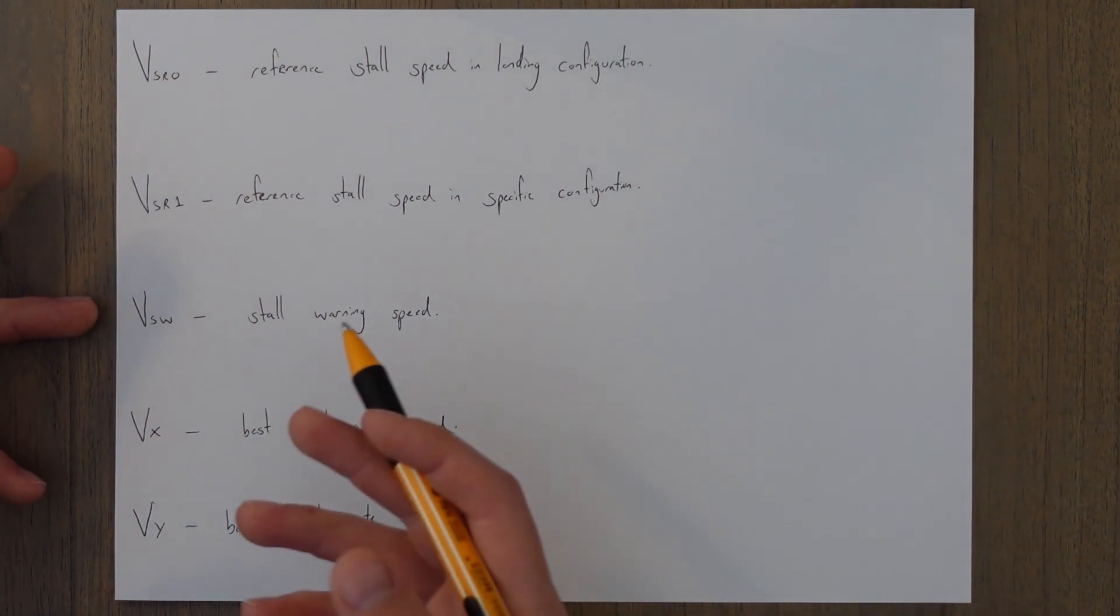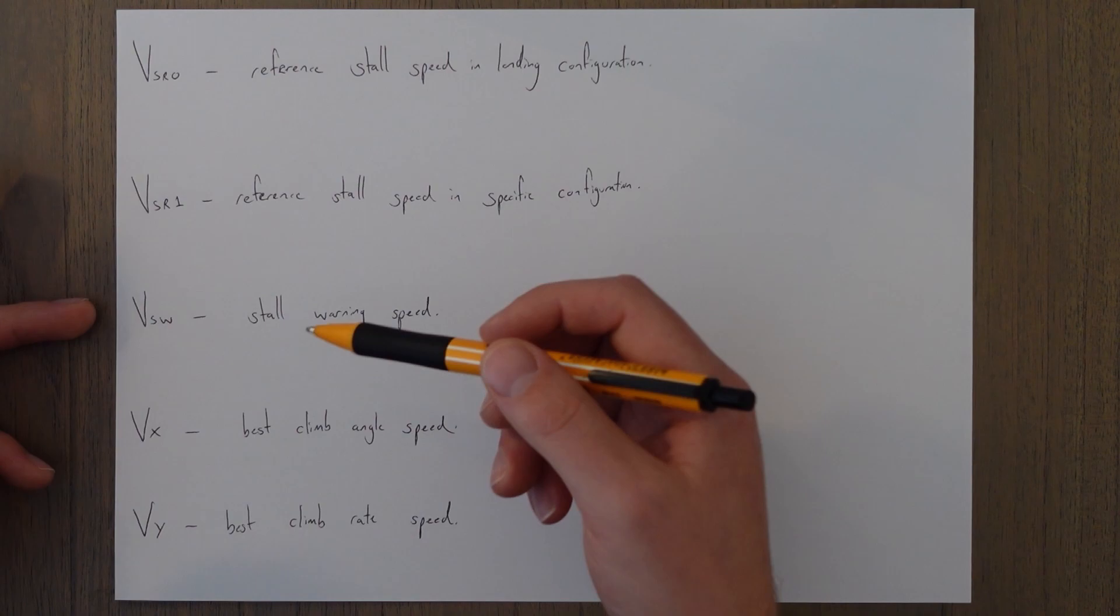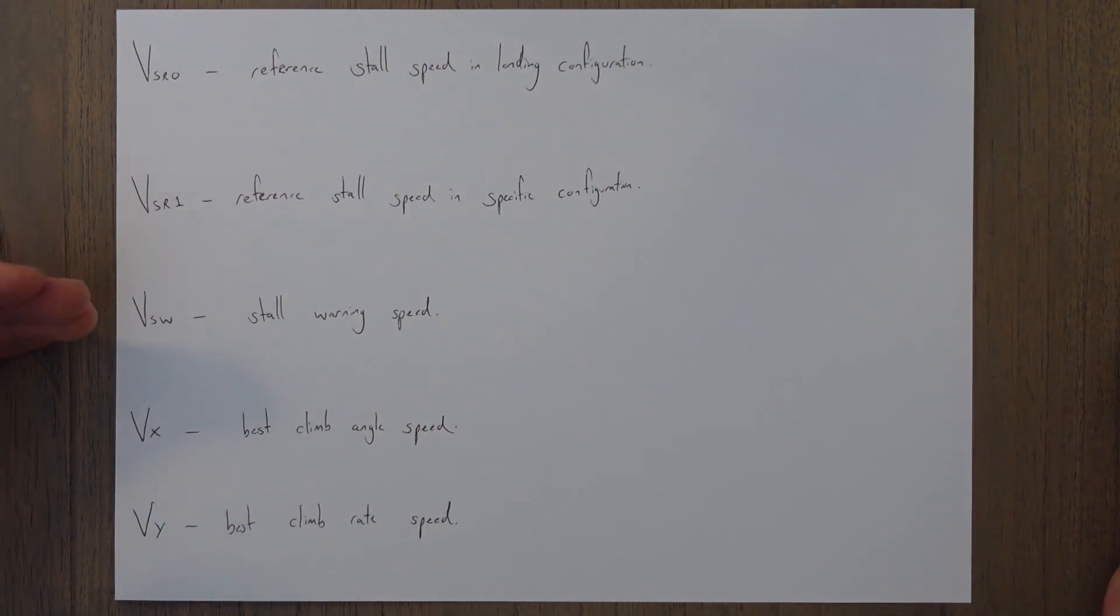VSW is where the stall warning will occur, so this might be a few knots above the stalling speed for whichever configuration we're in.